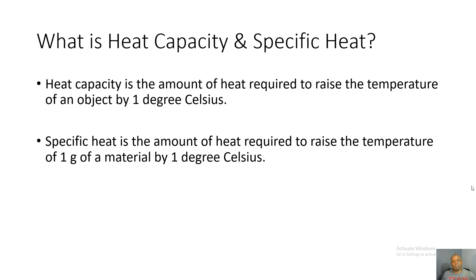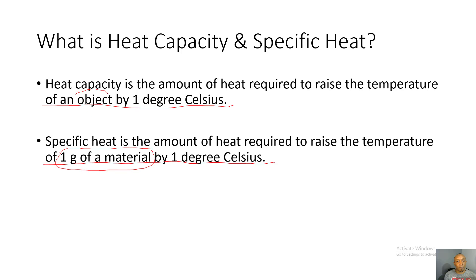What is heat capacity and specific heat? Their meanings are similar, but here's the difference: heat capacity is the amount of heat required to raise the temperature of an object by one degree Celsius, and specific heat is the amount of heat required to raise the temperature of one gram of a material by one degree Celsius.